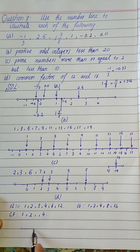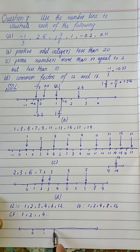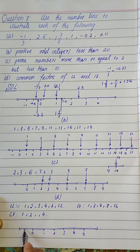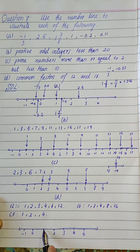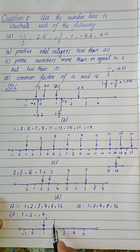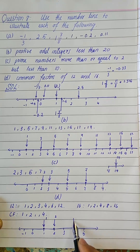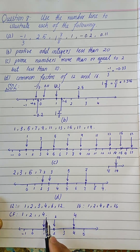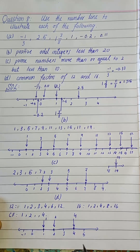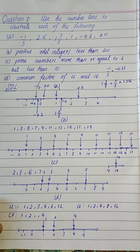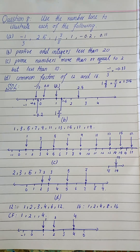We draw a number line with 0, minus 1, 1, 2, 3, 4, 5. The first common factor is 1, so we mark this point. The next common factor is 2, which is also marked. Then the other common factor is 4, so we mark that point as well. These three points — 1, 2, and 4 — are our answer.